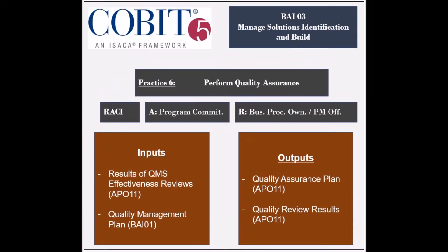The sixth practice is to perform quality assurance. The entities responsible for this practice are the business process owners, the project management office, and the head of IT development. The entity held accountable is the steering program committee. The practice receives two inputs: the results of the quality management system effectiveness reviews from the APO-11 process, and the quality management plan from the BAI-1 process.